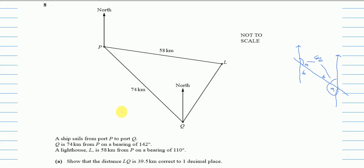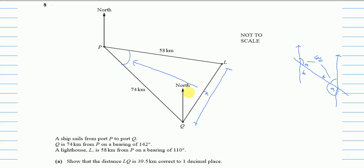In Part A we have to show that the distance LQ is 39.5 kilometers, correct to one decimal place. This distance is our unknown x. We need to use either the sine rule or the cosine rule, and we must know the angle opposite to the side we are looking for.